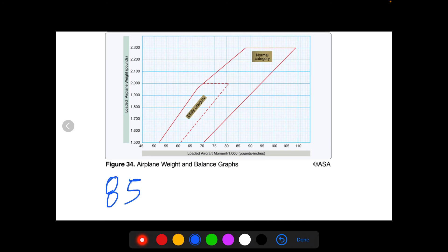And then you'll use this chart. So let's say our total moment was 85 and our total weight was 2100. So we would go up here to 2100, we draw a line all the way across, and then we would find 85 here and draw a line all the way up. And then where that intersects, that is our CG.